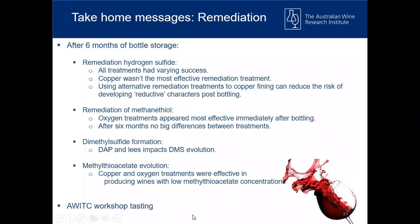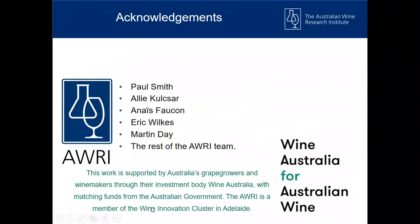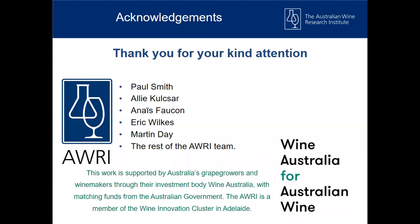Our take-home messages for the remediation trial after six months of bottle storage: for H2S, all treatments were successful — some were more successful than others — but it's interesting that copper wasn't the most effective. If you can use an alternative remediation treatment rather than copper, it is definitely preferred as you can reduce the risk of developing reductive characters post-bottling. These wines will be available for tasting at the AWITC, so come and make your own assessment. I'd like to acknowledge Paul, Ali, Anais, Eric, and Martin at the AWRI for all their help, and thank the Australian grape growers and winemakers who invest through Wine Australia.